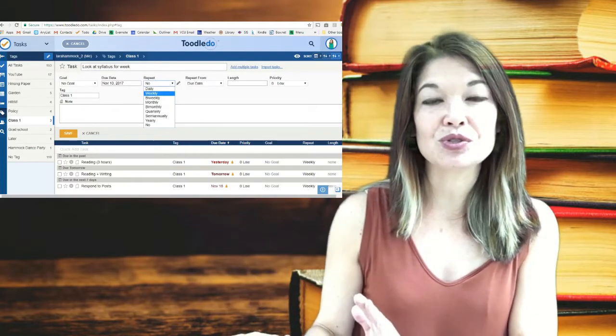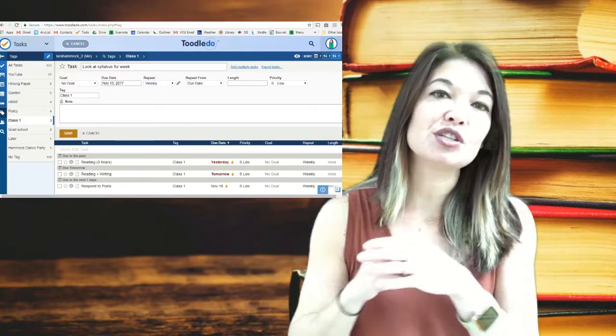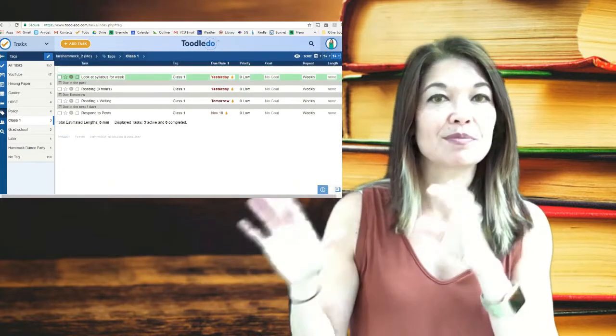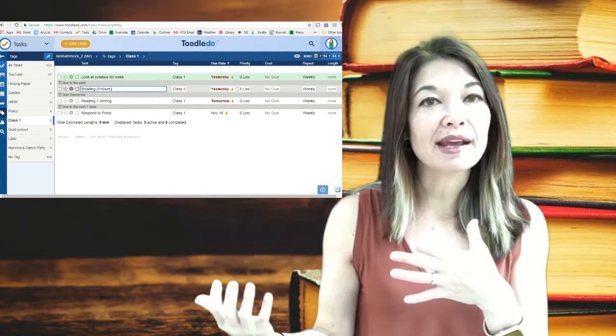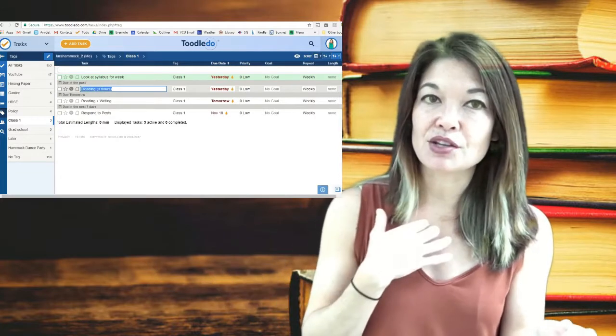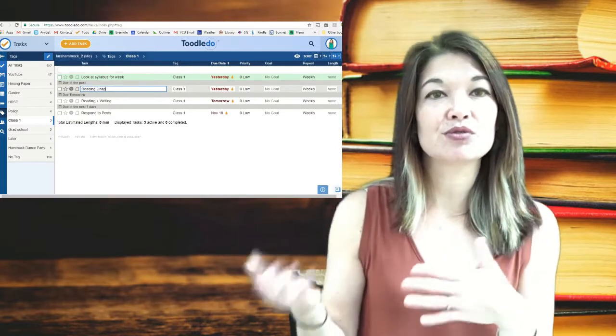For example, instead of just reading, I'm gonna change my Toodledo tasks to read chapter 10. Instead of writing, I'll put in write discussion board 8 and put the instructions in the notes. So I have a recurring to-do item that changes the names of these tasks every week.